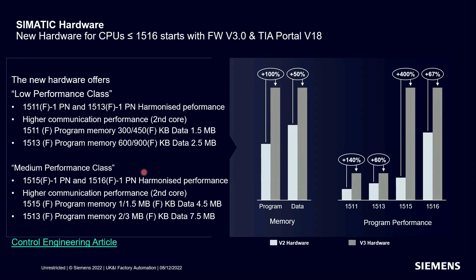The median performance class is the 1515 and 1516. The 1516 sees a 67% increase in performance, and the 1515 sees a very significant performance increase — with the same execution time for application code, double the memory, and 50% more data memory. There's a link in the handout to an article from our headquarters colleagues explaining where the additional performance can be used and how it helps CPUs meet future automation challenges.